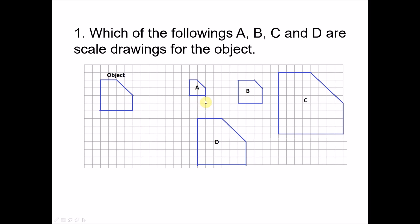We look at scale drawing A. We have one unit here and two units on the object. So one unit here represents two units of the object — one unit times two gives you two. Looking at the other sides: two units times two gives four, two units times two gives four, one unit times two gives two. All the sides are proportional. Hence A is a scale drawing.